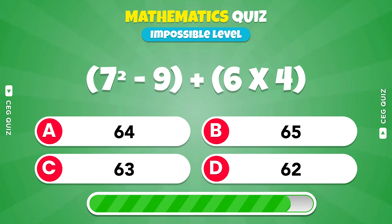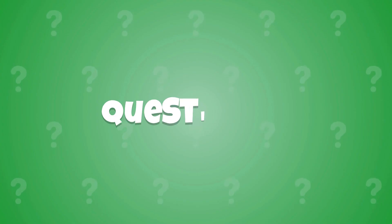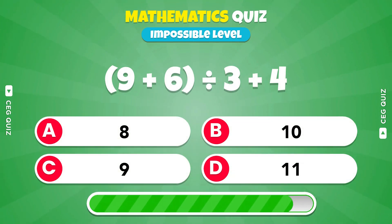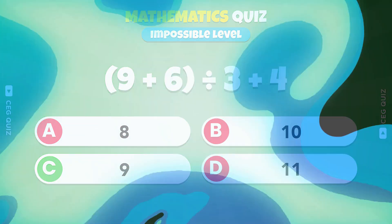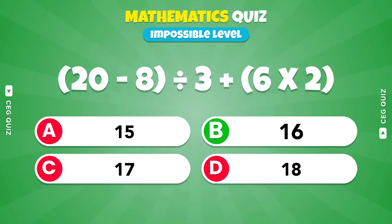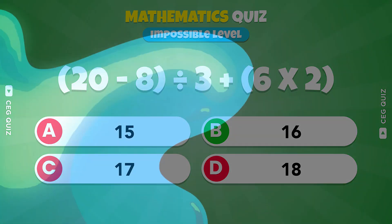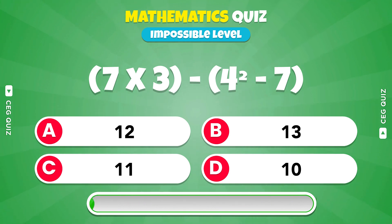What comes out after this calculation? Outstanding job, it's 64. Can you solve the next problem? Option C, 9. What about this math problem? 16. What does this calculation equal? It's 12.